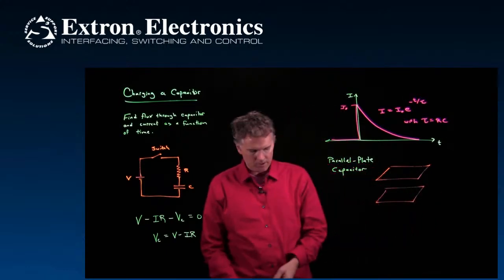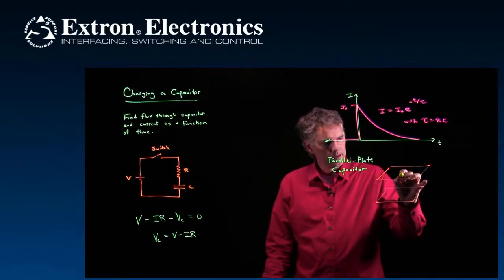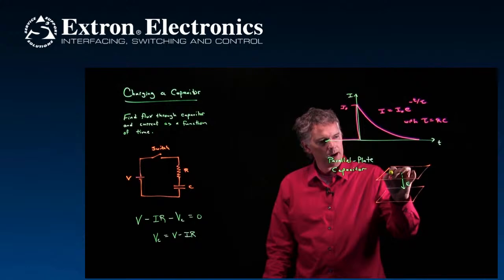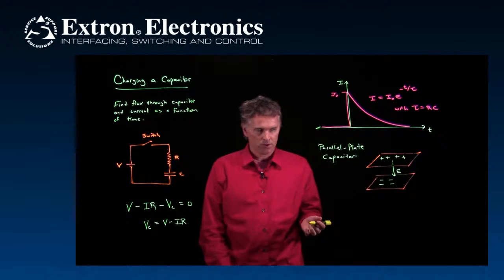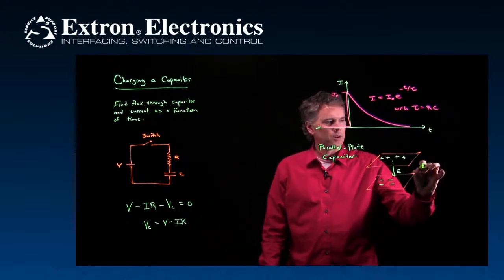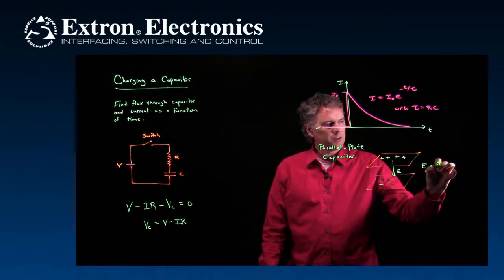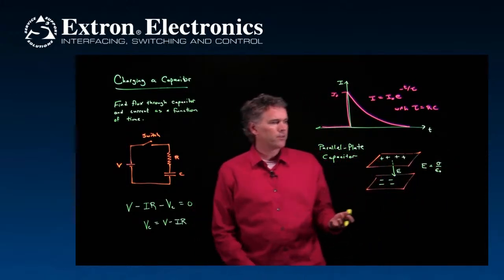And we know what's going on. We have an E field that is pointing down everywhere if the top plate is positively charged and the bottom plate is negatively charged. And we know what that E field strength is. That E field strength is sigma over epsilon naught. We solved Gauss's law to figure that out.